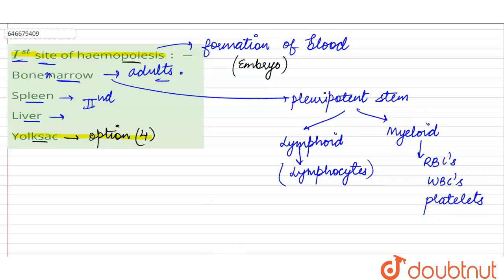So here we see that all the blood components, the primary site of which is the yolk sac. So option 4 becomes the right answer for this question, and this occurs in the embryonic stage. This is all about this query. Thank you.